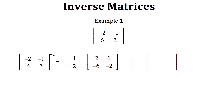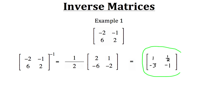All we need to do now is take the scalar 1/2 and multiply it to every element in this matrix to get the inverse. So: 1/2 times 2 equals 1, 1/2 times 1 equals 1/2, 1/2 times negative 6 equals negative 3, and 1/2 times negative 2 equals negative 1. This resulting matrix is the inverse of our original matrix.